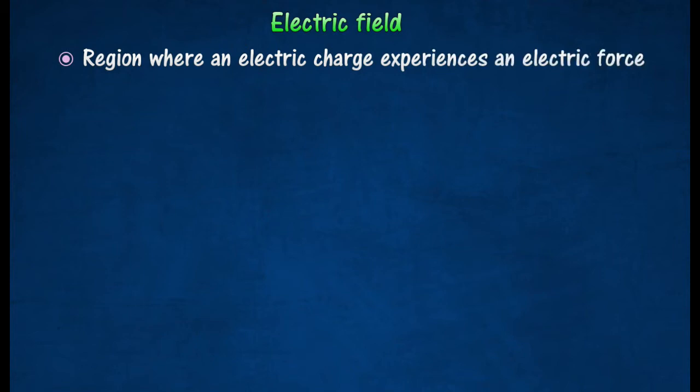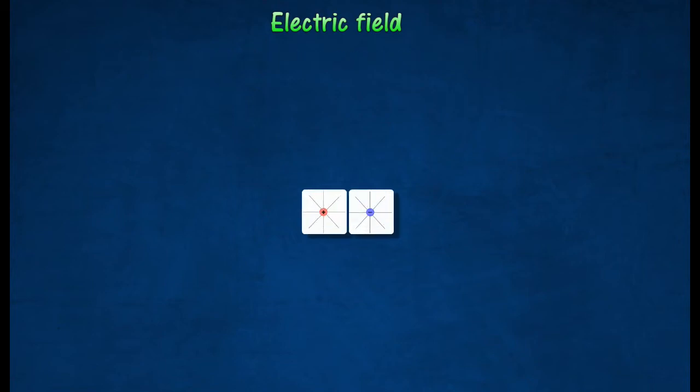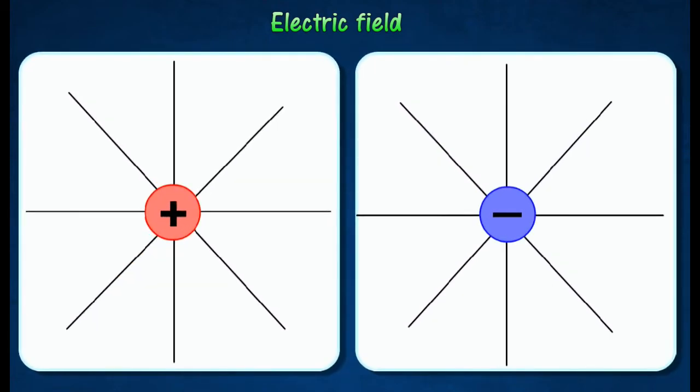An electric field is represented by a series of arrowed lines, called electric field lines.